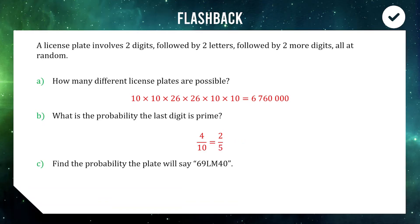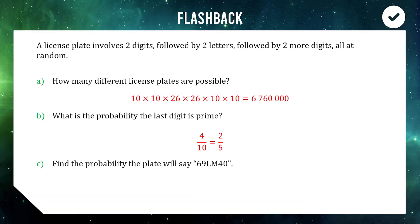For question C, find the probability that the plate reads 69LM40. This specific combination is one of our 6.76 million possibilities, so if we had a randomly generated plate the probability we end up with this exact combination would be one out of 6.76 million, because it's just one of all those combinations.